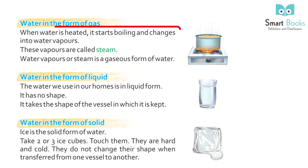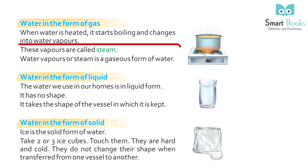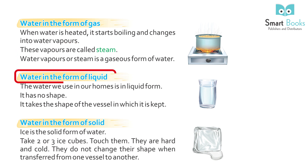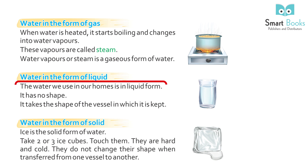Water in the form of gas: when water is heated, it starts boiling and changes into water vapor. These vapors are called steam. Water vapor or steam is the gaseous form of water.